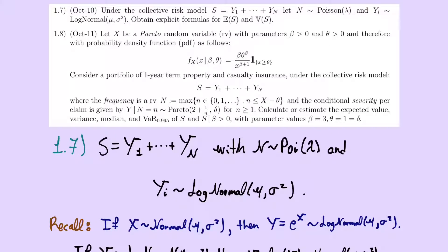In this session we will discuss these two exercises. For the first one, Exercise 1.7, we have a collective risk model with a random variable S equal to the sum of random variables Y, where the number of random variables N is also a random variable. In this case, N has a Poisson distribution — that is the frequency random variable.